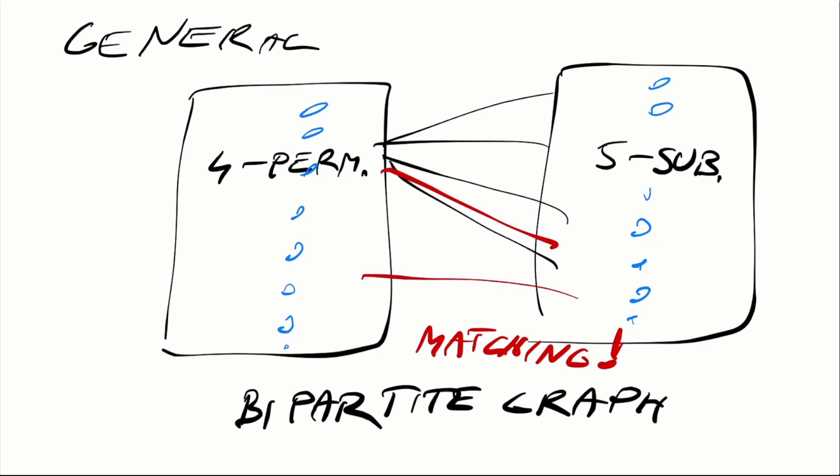So each four permutation is only connected with the five subsets that contain all four of those cards. And the bigger matching we can find, the more there are cases in which the magician will correctly identify the fifth missing card.